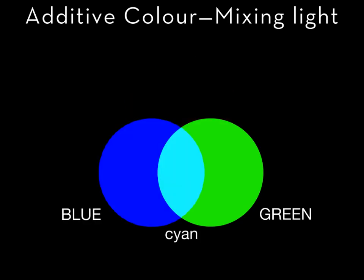When the blue and the green cones are both stimulated we see cyan. Blue light plus green light produces cyan light. And cyan is a secondary additive color.